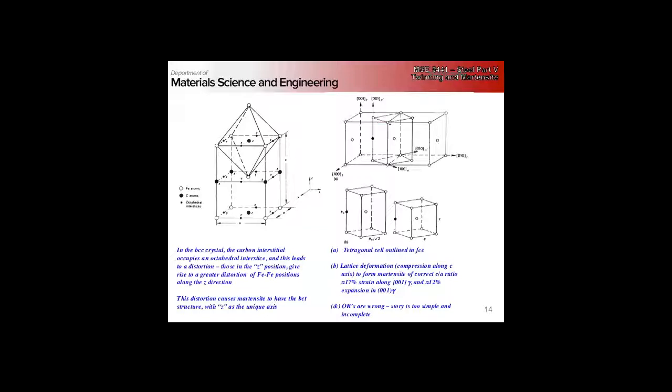But remember, in 1924 we didn't have the electron microscope. We had X-ray diffraction, so we knew what the lattice was before and after the martensite transformation, but we had no way of interrogating the structure of it or knowing anything about undistorted planes. This was just a mechanism proposed from what was observable at the time.